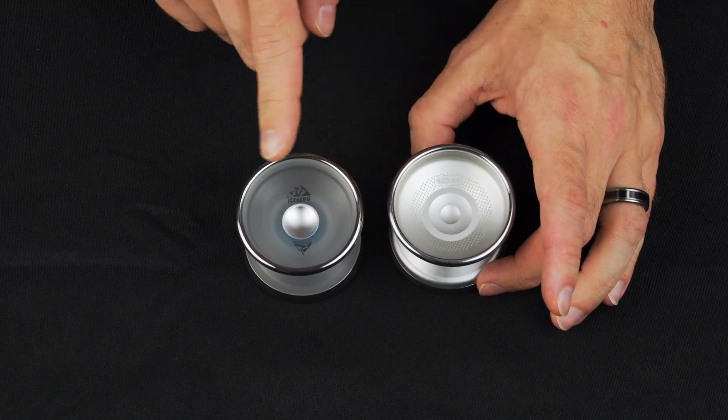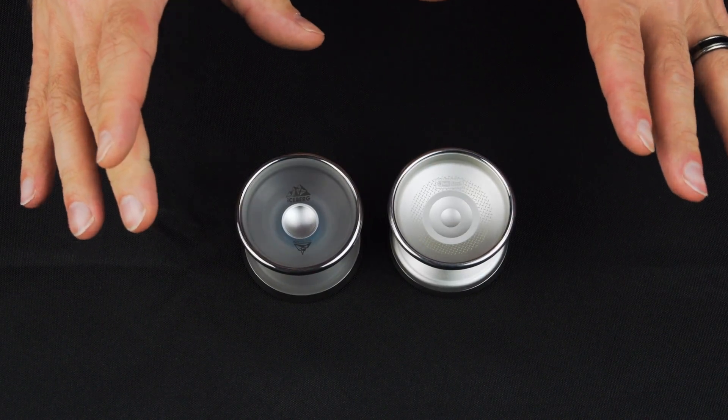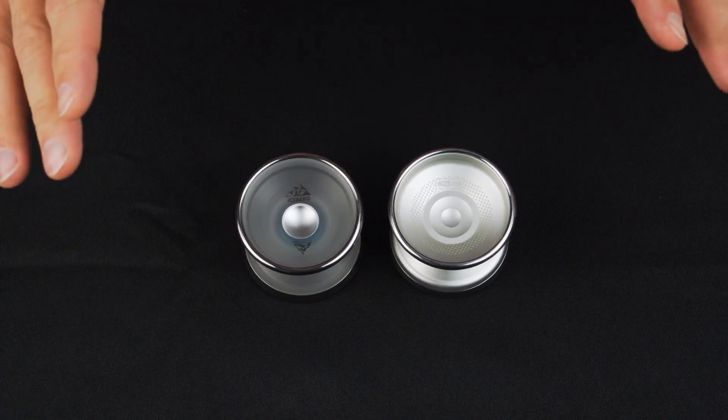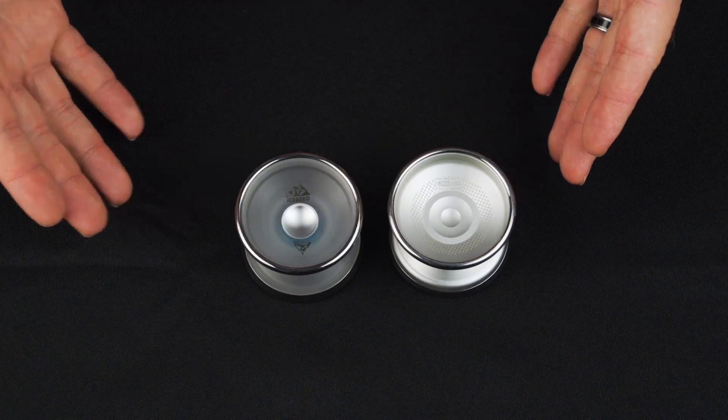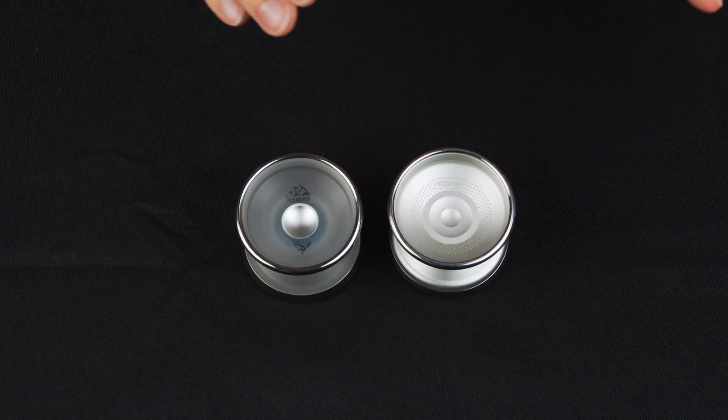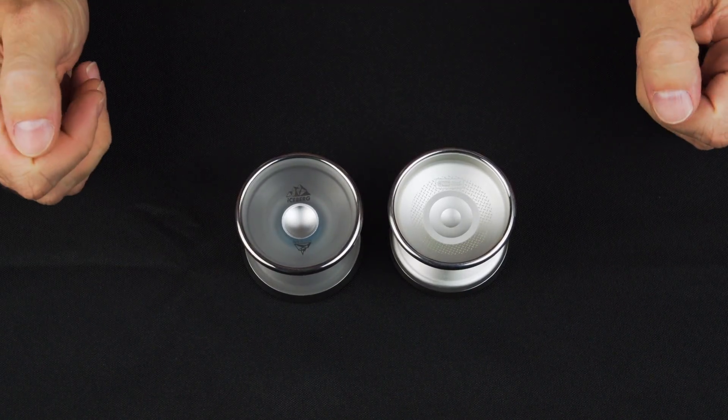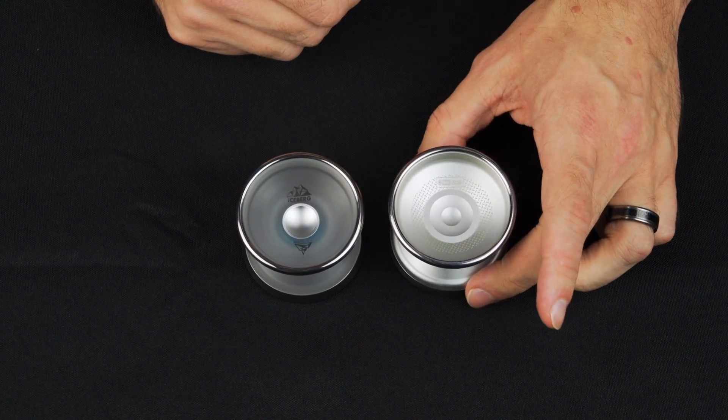We feel like the Iceberg, when compared to the Steel, it bests it in pretty much every way. I know that when you're looking at this you're thinking, how could a plastic yoyo actually be better than an aluminum yoyo? But that's kind of the magic that they achieved through the Iceberg, so that's what I'm going to talk about.